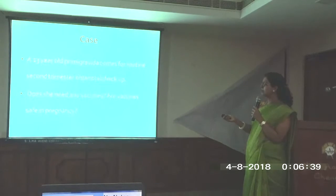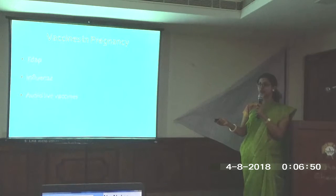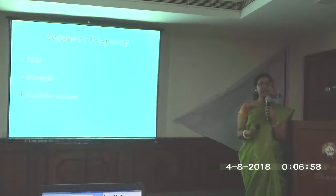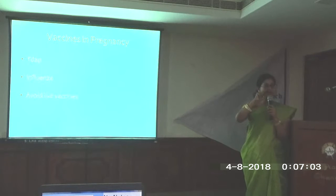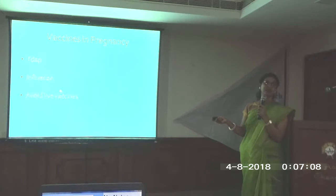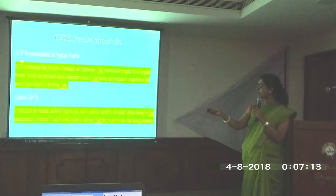A 23-year-old primigravida comes for a routine second trimester antenatal checkup. Which vaccines are safe in pregnancy? Two important vaccines should be given: Tdap — in every pregnancy, one dose of Tdap between 24 and 36 weeks is recommended, previously it was two doses but now it is one dose repeated in every pregnancy. The second important vaccine is the influenza vaccine. Live vaccines should be avoided for pregnant females, as per ACIP recommendations.